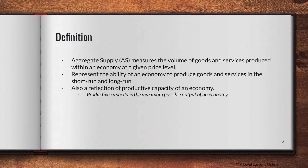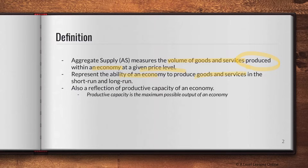Let's go right in. The definition of AS: aggregate supply essentially measures the volume of goods and services produced within an economy at a given price level. It's similar to your micro supply — the same concept but at a bigger scale — so it's the volume of output produced given a certain price level. It represents the ability of an economy to produce goods and services in both the short run and the long run. There's a short run AS and a long run AS, and make sure you don't get confused between the two — they are very different.